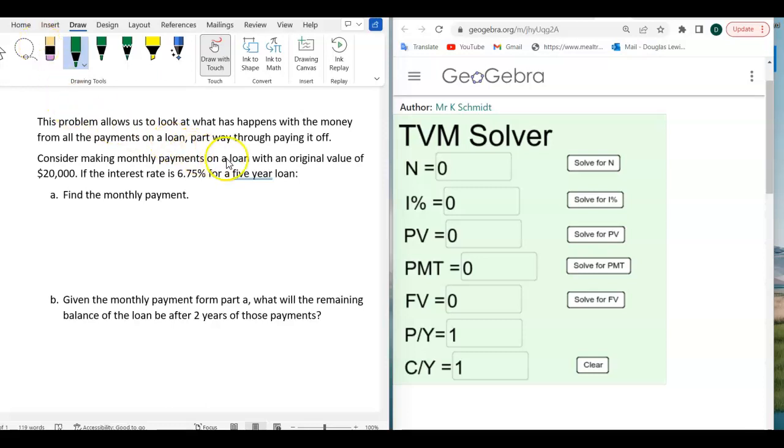So it says consider making monthly payments on a loan with an original value of $20,000. If the interest rate is 6.75% for a five-year loan, find the monthly payment.